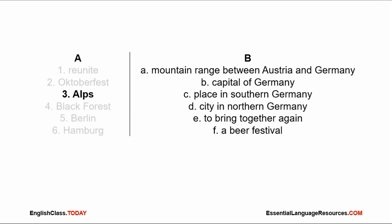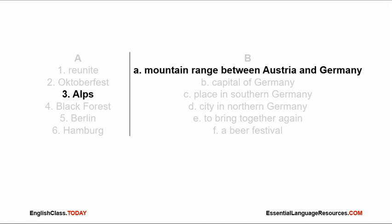Three: Alps — mountain range on the border between Austria and Germany.